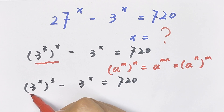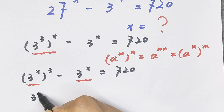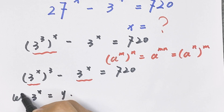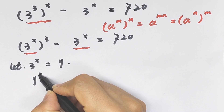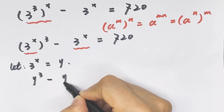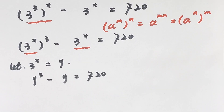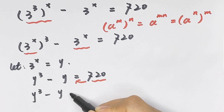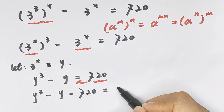Now 3 to the power of x is a common term, so we let 3 to the power of x equal y. Then our equation can be written as y cubed minus y equals 720. We take everything to the left side, so y cubed minus y minus 720 equals 0.